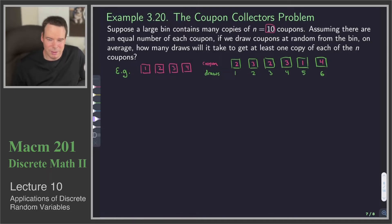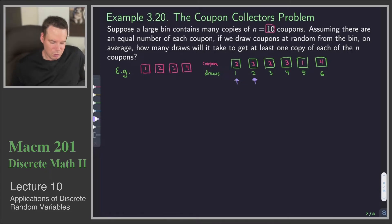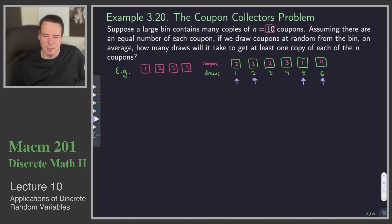The question is how many draws on average will it take to collect all four coupons. We want to keep track of the milestones — when we get a new coupon. Think about opening mystery packs, whether it's Lego minifigures or what have you: you open it up and you've already got this one. That's what's happening here. We got the first coupon, then a second one, then drew a repeat, drew another repeat, then got a new one on the fifth draw, and finally the fourth on the sixth draw — collected the whole set.